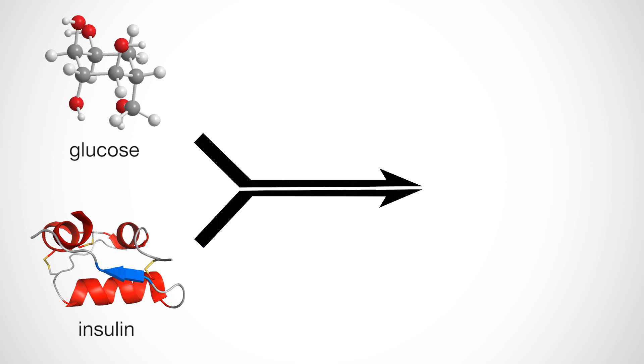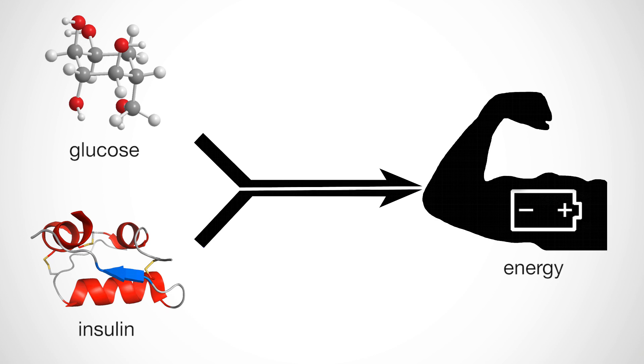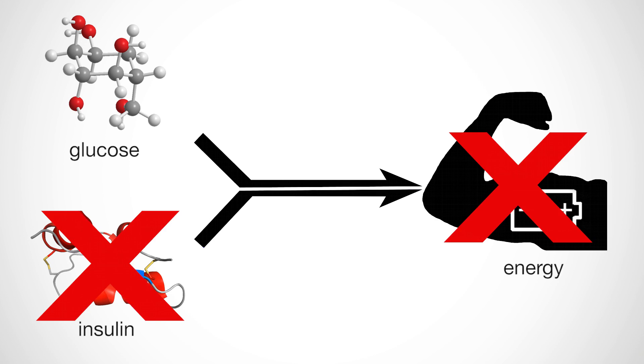People who have impaired insulin function are known as diabetic. Without insulin, the body is unable to absorb glucose from the blood to convert it into energy.